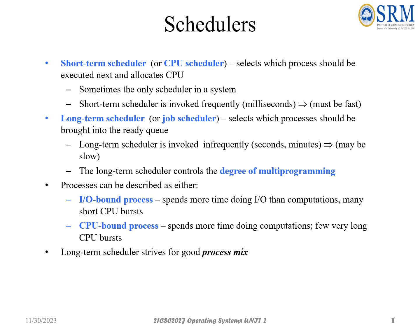Good morning, I am Dr. Jyothi Kumar. Today we will discuss about the topic scheduler in operating system. We have three types of scheduler: one is short-term scheduler, another is long-term scheduler, and the other is mid-term scheduler. The short-term scheduler is also called CPU scheduler, and the long-term scheduler is also called job scheduler.